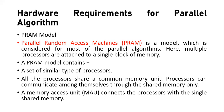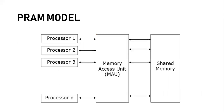Processors communicate among themselves through the shared memory only. A Memory Access Unit — MAU — connects the processors with the single shared memory. The processors and memory communicate through this interface called the Memory Access Unit. In this basic architecture, you have a shared memory, N number of processors, and a Memory Access Unit directly linked. Processors always communicate with shared memory using the MAU.